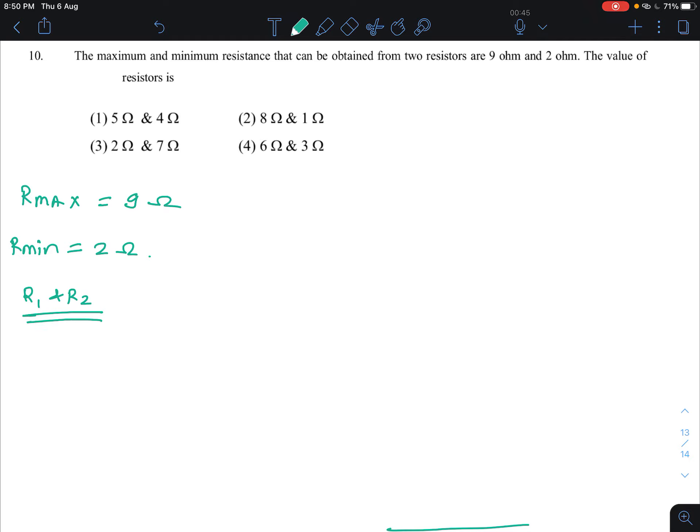Let's say R1 and R2 be the two resistances. The maximum resistance is when they are connected in series combination. The minimum resistance is when they are connected in parallel combination.